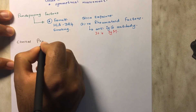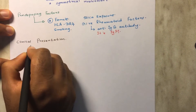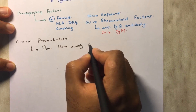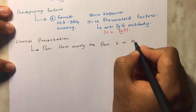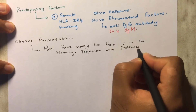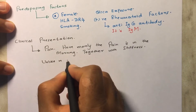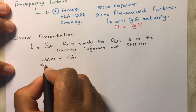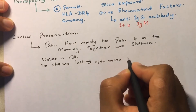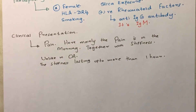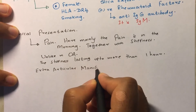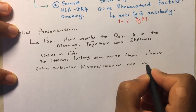The most important clinical presentation of rheumatoid arthritis is pain — specifically morning stiffness, where the patient feels the joint is very stiff and it takes more than an hour or an hour and a half to move the joint freely. This is due to an inflammatory process overnight causing a gelling between the articular surfaces.